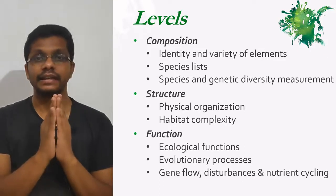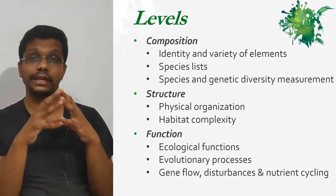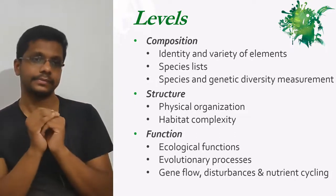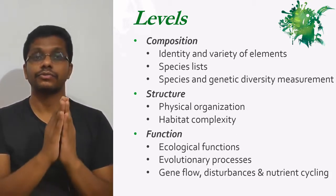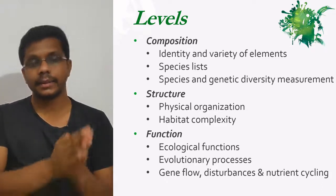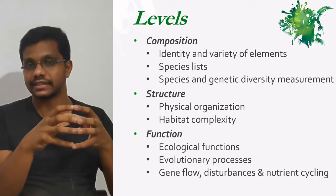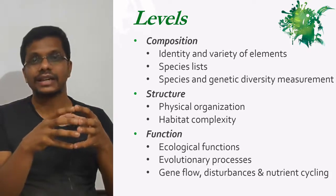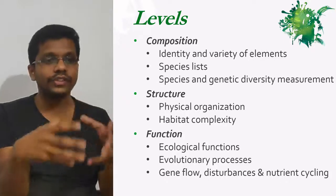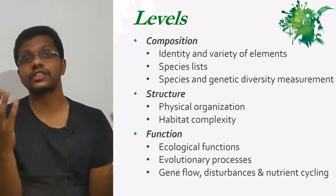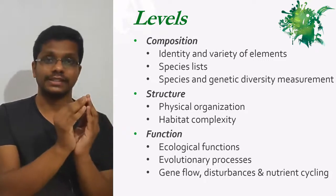This monitoring can be done at three different levels: the composition level, structure level, and function level. These are the three main features of biodiversity and ecosystem. Composition level monitoring includes the identification of different elements in the biodiversity — maybe a list of species, the genetic diversity — basically what all are the components of biodiversity and what is the genetic diversity within a system. Or we can study at the structure level: the physical organization or the complexity of the habitat, how the communities are structured.